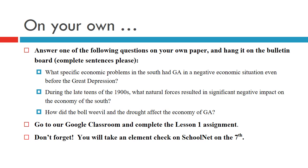On your own, pick one of the following questions and respond to it on your own paper, then hang it on the bulletin board in the classroom. Your options are: answer the essential question about what specific economic problems had Georgia in a negative economic situation before the Great Depression; or, what natural forces in the late teens of the 1900s resulted in significant negative impact on the economy of the South; or, how did the boll weevil and the drought affect the economy of Georgia? Then go to Google Classroom and complete the Lesson 1 assignment. And don't forget, on January 7th you will take an element check on SchoolNet.